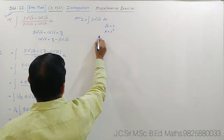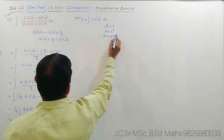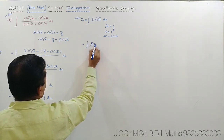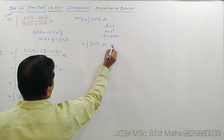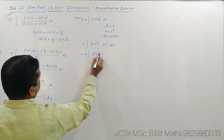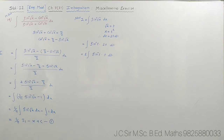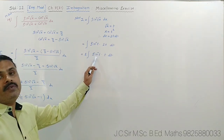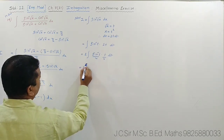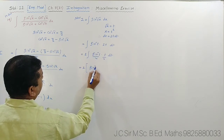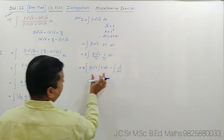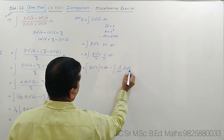Substituting: I₁ = ∫ sin⁻¹(t) · 2t dt = 2 · ∫ t · sin⁻¹(t) dt. Using integration by parts (LIATE: inverse first): u = sin⁻¹(t), v = t. So: 2 · [sin⁻¹(t) · t²/2 − ∫ (1/√(1−t²)) · t²/2 dt] = t²·sin⁻¹(t) − ∫ t²/√(1−t²) dt.